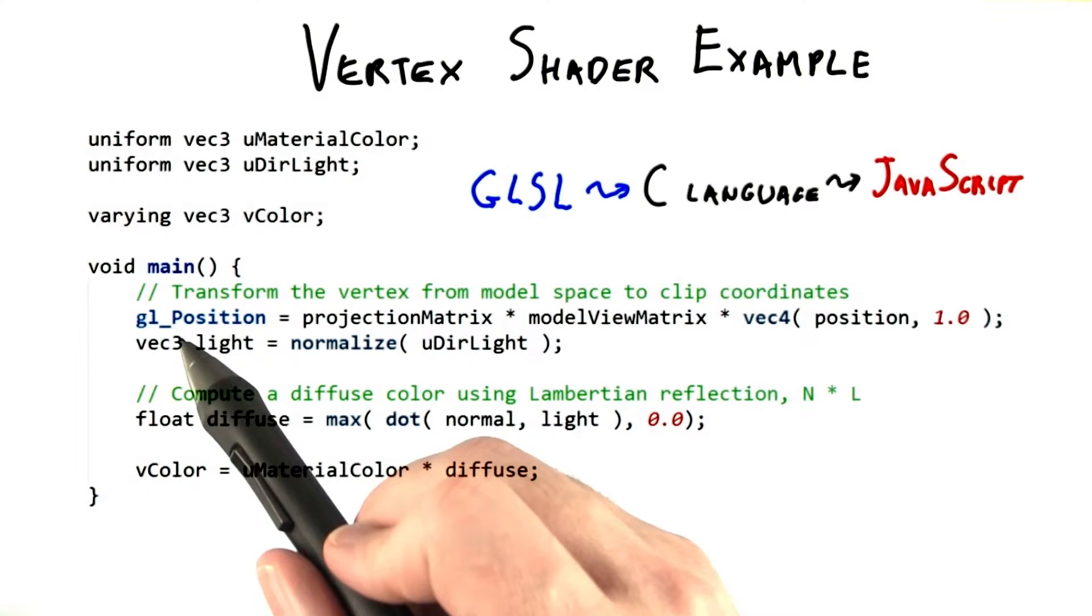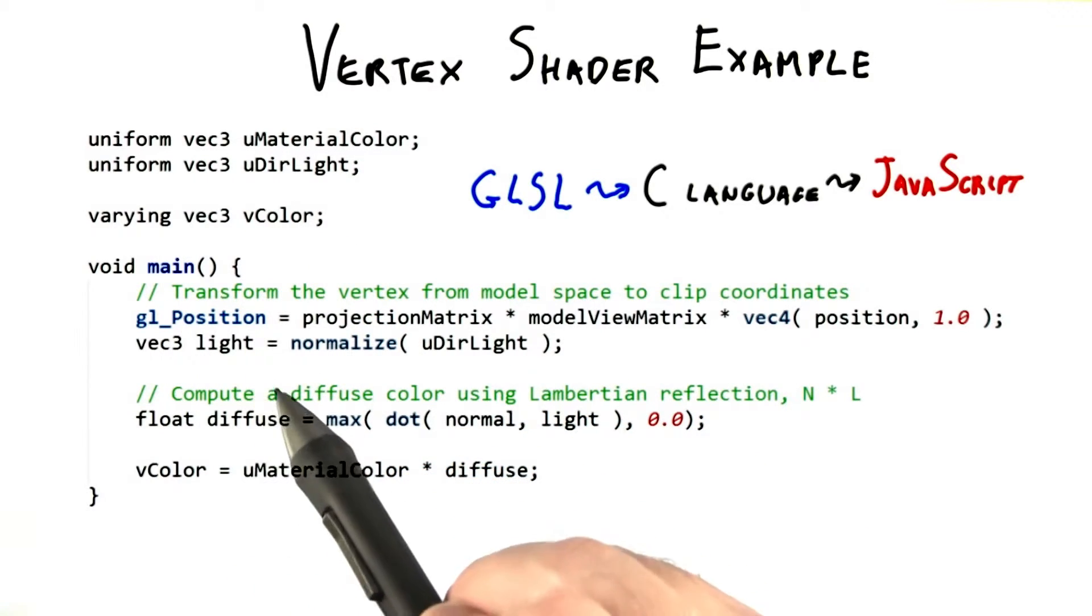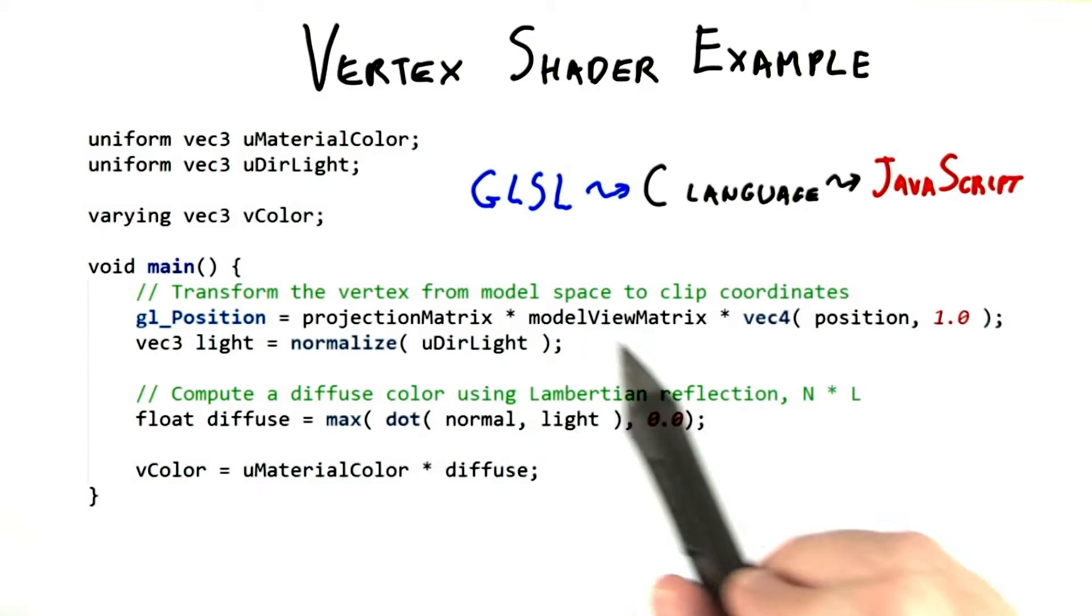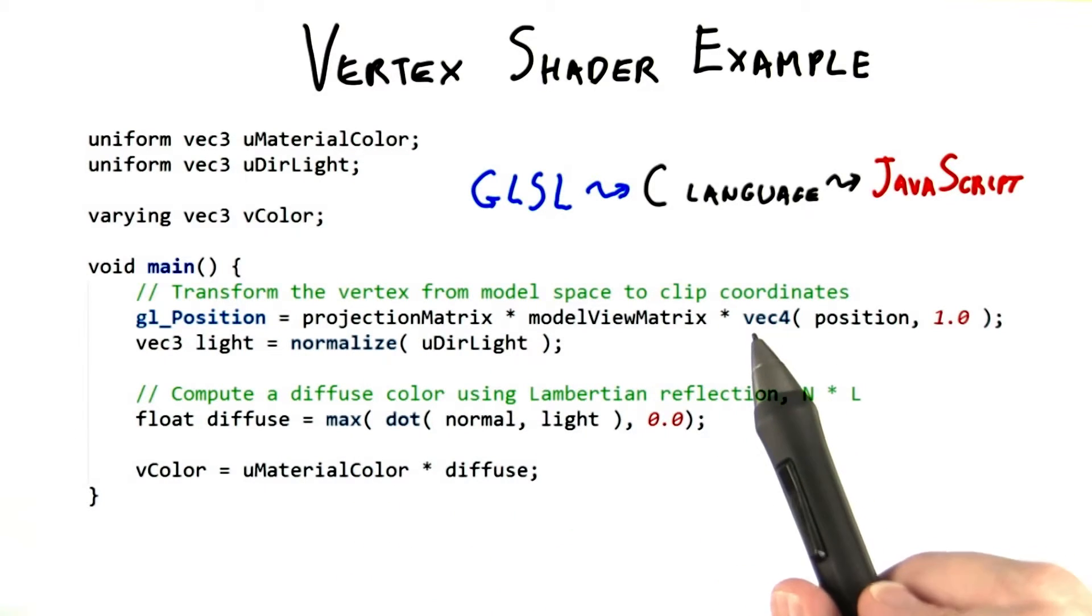The vertex shader is required to always output GL position, which is a predefined variable. This vector holds the clipping coordinates of the vertex location on the screen.